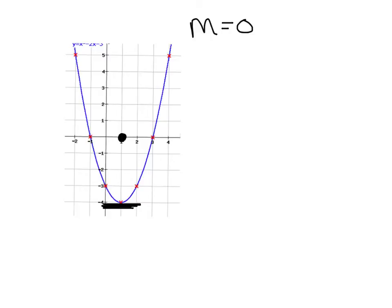Remember, I am graphing slopes. All the slopes to the right of my horizontal line are positive — if I put tangent lines on there, they all have positive slopes. Everybody to the left has a negative slope. So if I have a positive slope, I'm graphing a positive point; if I have a negative slope, I'm graphing a negative point. We're just going to estimate what we think the slopes are — there's no right or wrong answer as long as you're in the ballpark.